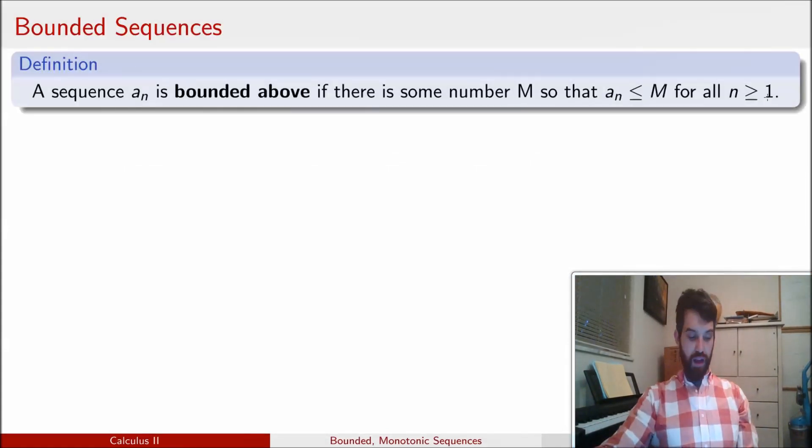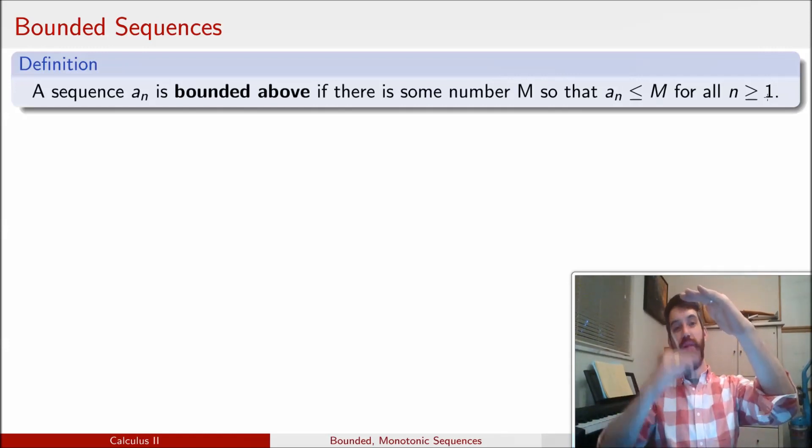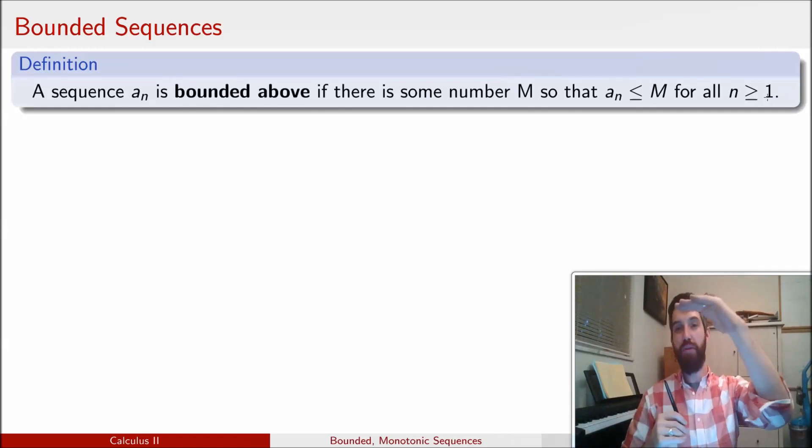Boundedness first. We're going to say that a sequence is bounded if all its terms have some bound. In particular, we'll say it's bounded above if all the terms in the sequence are going to be less than some top bound M.